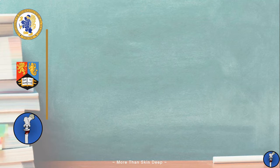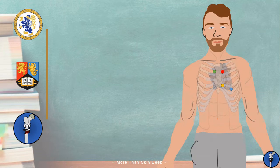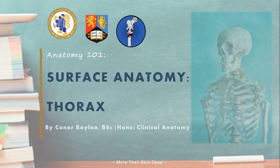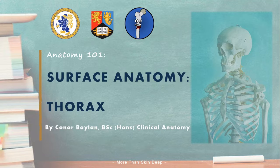In everyday medicine, most anatomical structures are housed deep inside the body, covered by skin and fat and muscle. However, you'll still have to be able to estimate the location of these structures, even when they're not visible. The way we do this is by learning surface anatomy, which is essentially the study of the superficial features of the body and how they relate to the deeper ones. My name's Connor, and today we're going to cover the surface anatomy of the thorax, including where to listen when trying to hear the heart valves. Welcome to Anatomy 101.